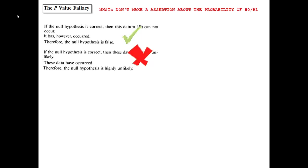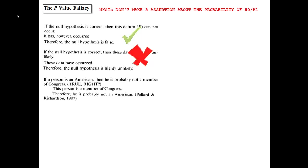You can easily see why it isn't valid when you look at an example: if a person is an American, then he is probably not a member of Congress; this person is a member of Congress; therefore, he is probably not an American. That conclusion is clearly wrong.